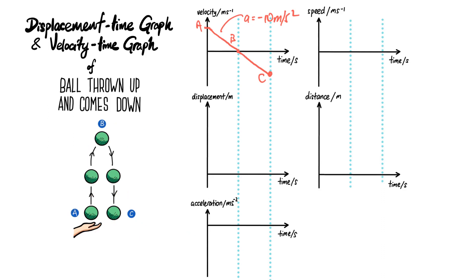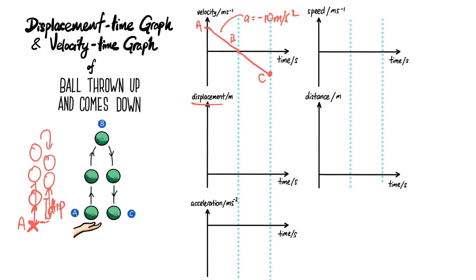Now let's look at the displacement-time graph. First, we need to understand what displacement is. You can think of displacement as the distance between the ball and a fixed reference point — let's say position A. As the ball goes higher, the displacement gets bigger; as it comes down, the displacement gets shorter. Also note that the gradient of a displacement-time graph — rise over run, displacement over time — represents the velocity.